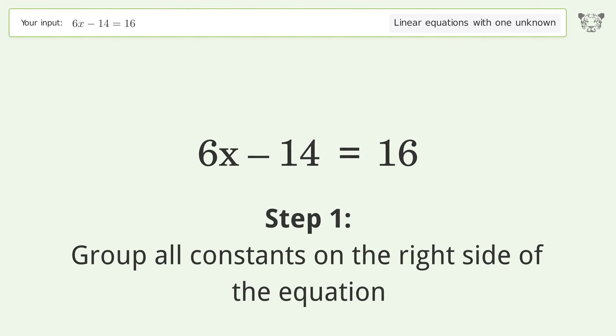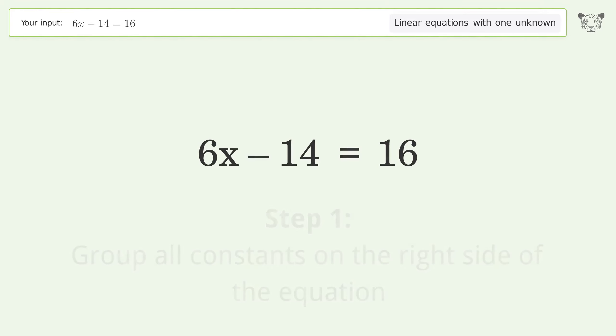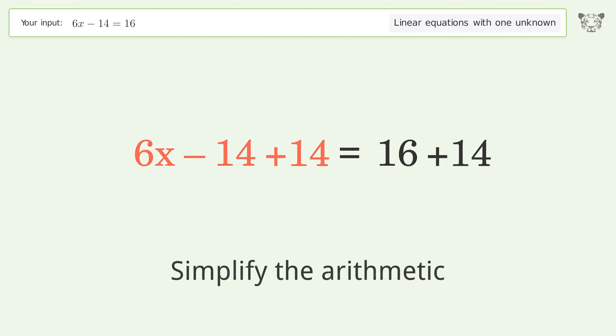Group all constants on the right side of the equation. Add 14 to both sides. Simplify the arithmetic.